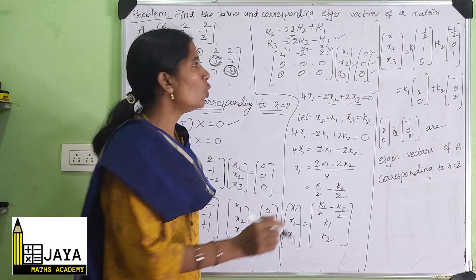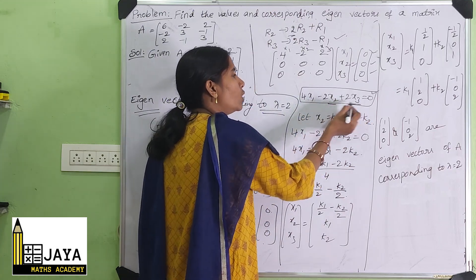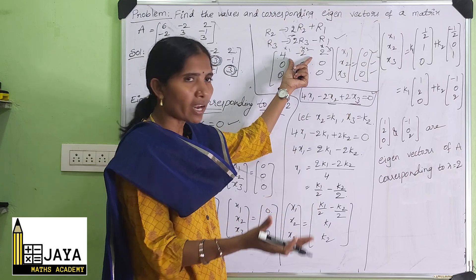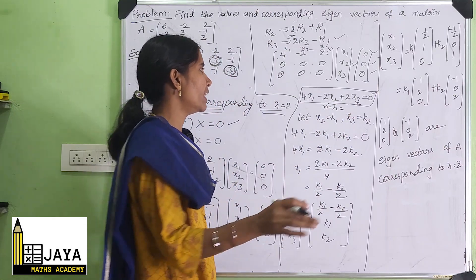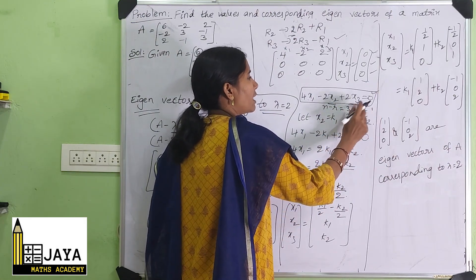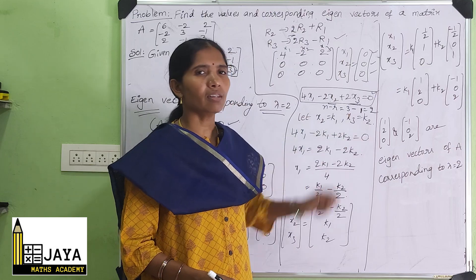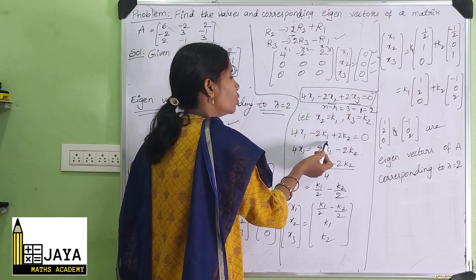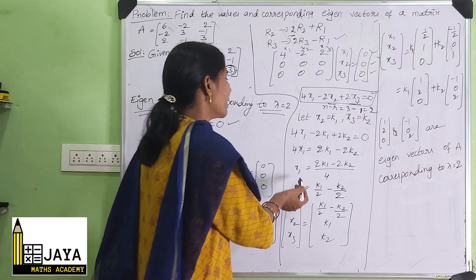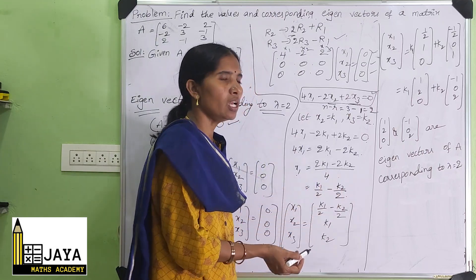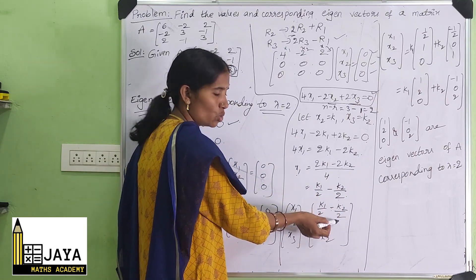With rank R = 1 and n = 3 unknowns, we assume n - R = 2 free variables. Let X2 = K1 and X3 = K2. Then 4X1 = 2K1 - 2K2, so X1 = (K1/2) - (K2/2). Thus [X1, X2, X3] = K1·[1/2, 1, 0] + K2·[-1/2, 0, 1]. Multiplying through by 2: K1·[1, 2, 0] + K2·[-1, 0, 2].